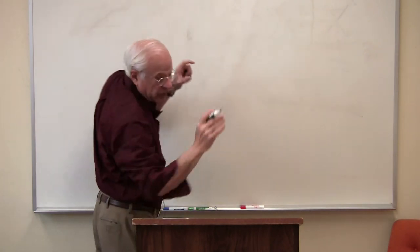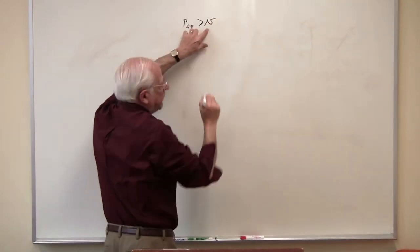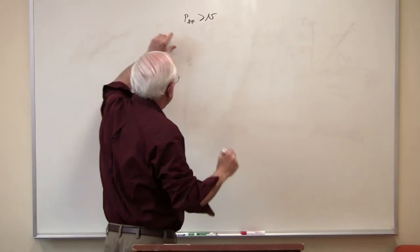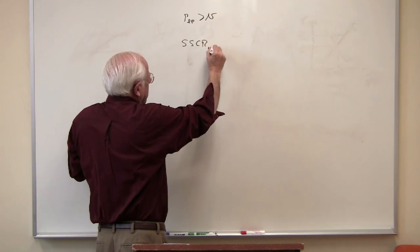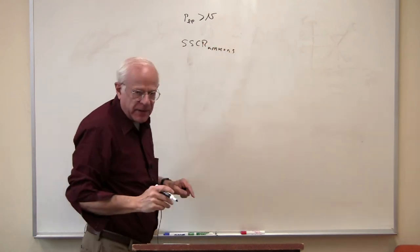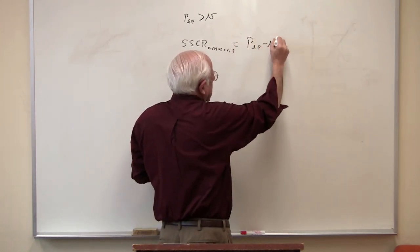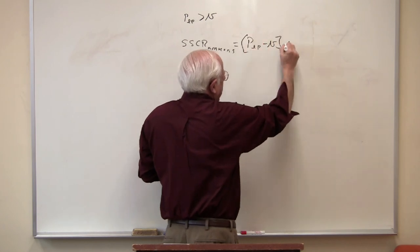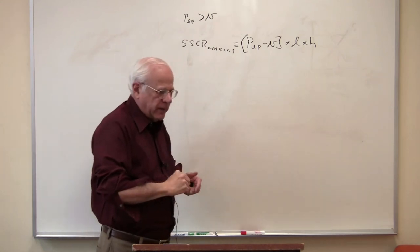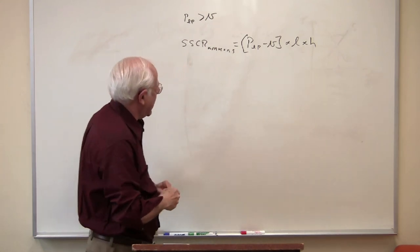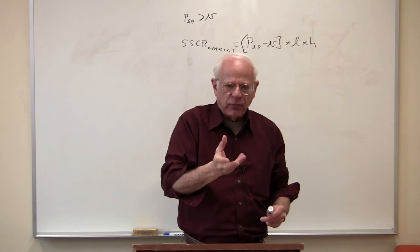So workers would try and get a price of labor power greater than the little v — remember, that's the value per unit. Suppose they were successful. Suppose the workers were able to get a new subsumed class revenue from the capitalists in the means of production industry. So that would be the price of labor power times all the workers times the hours they work. Suppose the union bargained with the capitalists, and what they bargained for was a higher real wage.